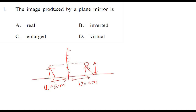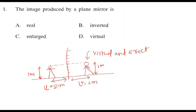The object distance and image distance are the same. If the height of the object was 1 meter, then the height of the image is also 1 meter. These are the characteristics of the image formed — this image is virtual and erect. The height of the image and the height of the object always remain the same. If the height becomes 2 meters, the height of the image also becomes 2 meters. So the correct answer is virtual.